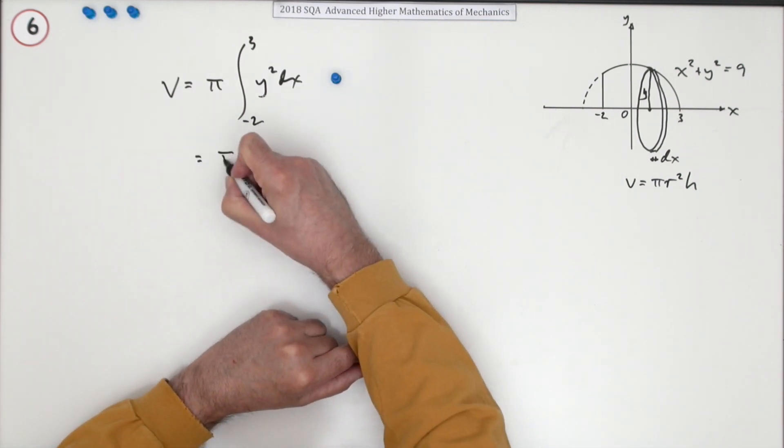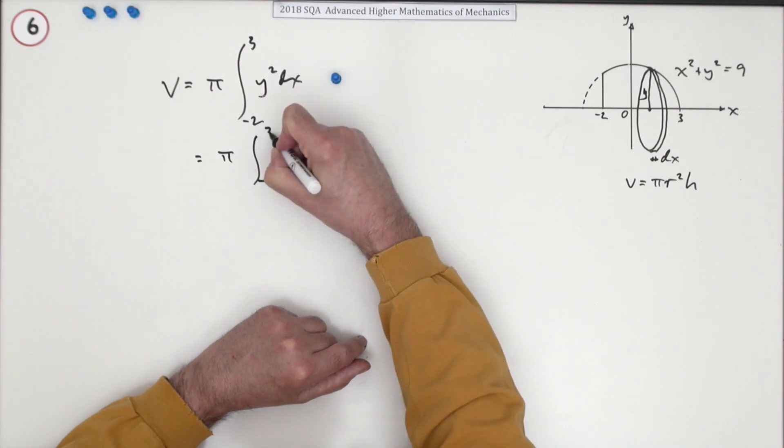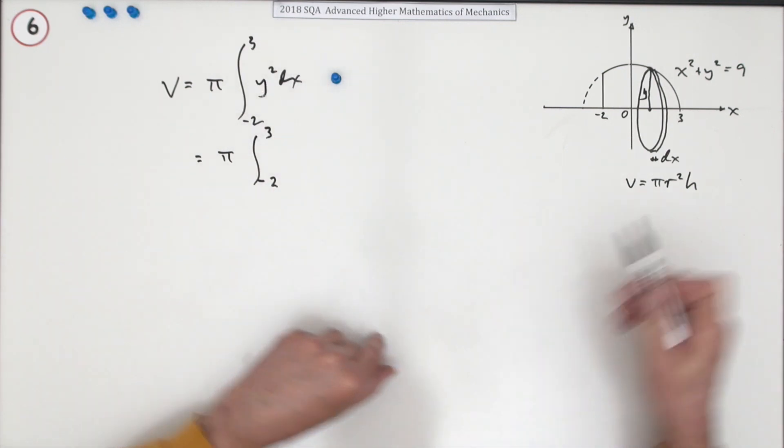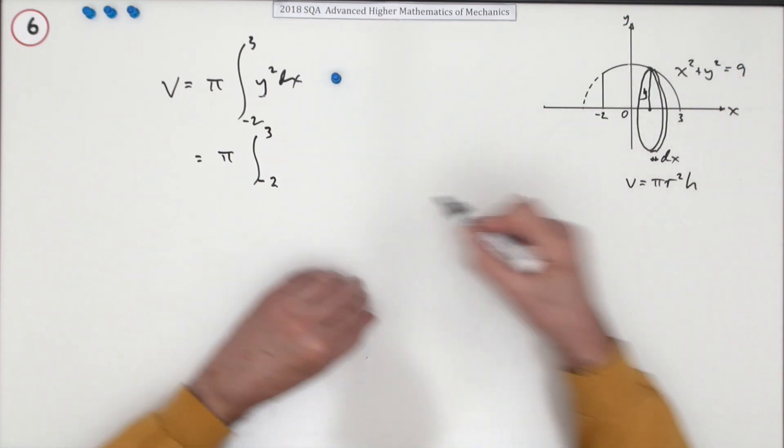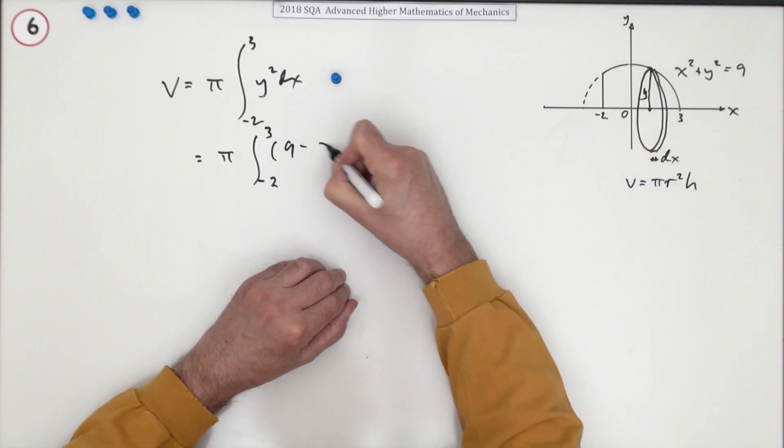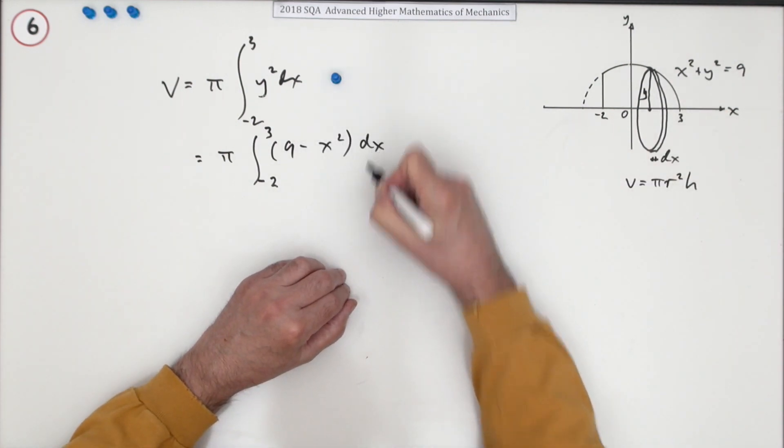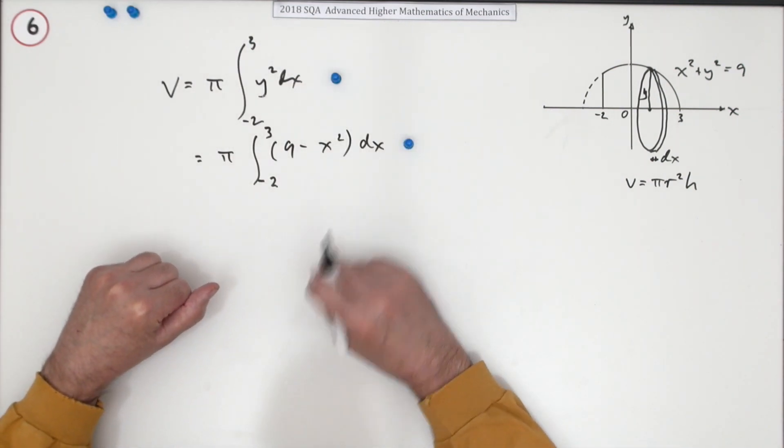Now it's just a case of putting in the figures. So you've got integral from negative 2 to 3 of, now I need y squared. And luckily this has got y squared in it straight away. So y squared will be 9 minus x squared. Doing that, I'm just throwing the marks at you here. Doing that gives you a mark.